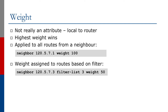Highest weight wins — a little bit like local preference, where highest local preference wins. Weight can be applied in a number of ways: it can be applied to all routes from a neighbor directly on the neighbor peering, it can be applied to routes based on a filter, and it can be applied within the policy language that Cisco IOS and other vendors implement.